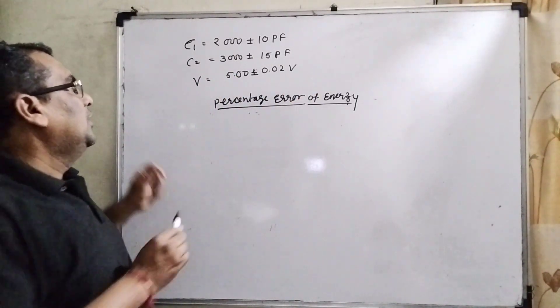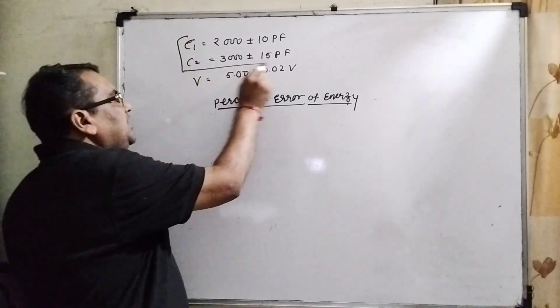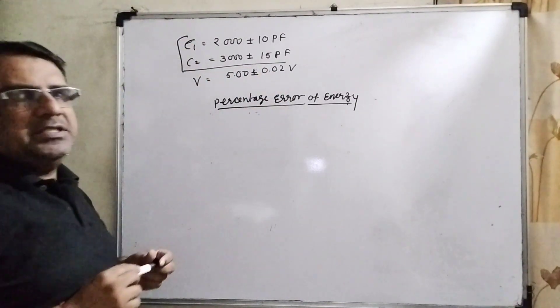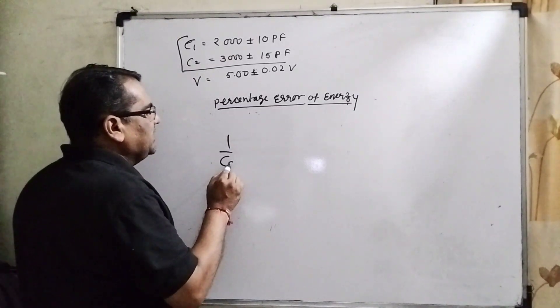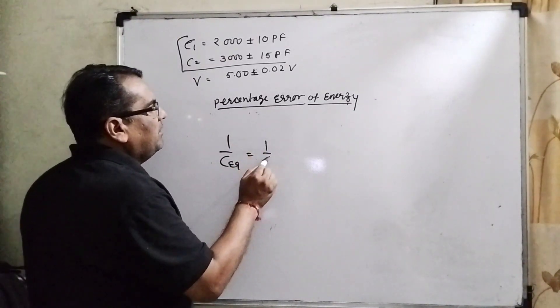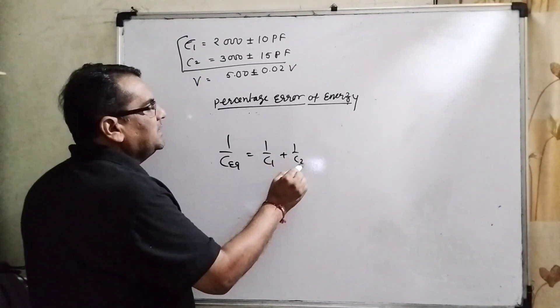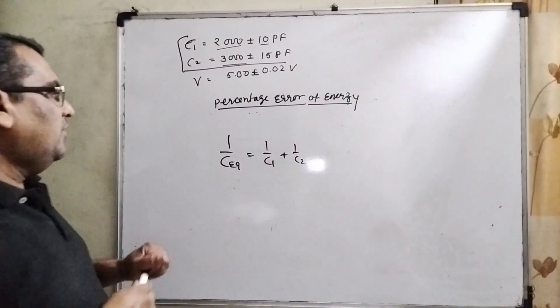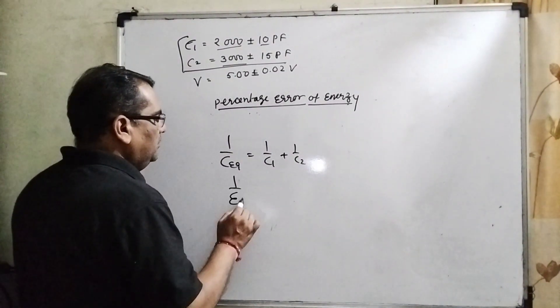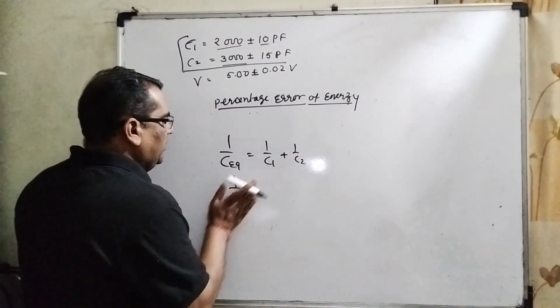First, you have C1 and C2, capacitors in series. You know very well that equivalent capacitance is 1 by C_eq equals 1 by C1 plus 1 by C2.